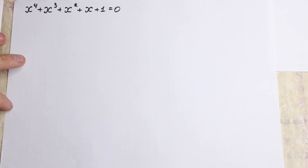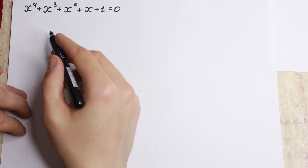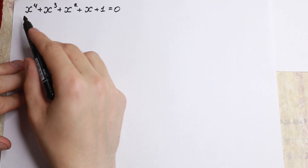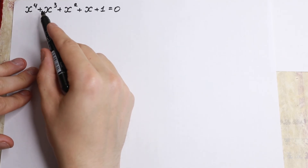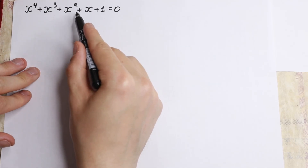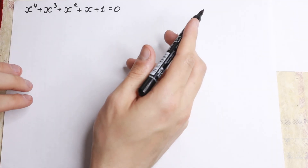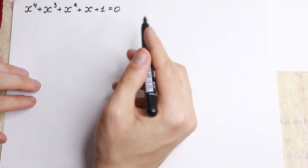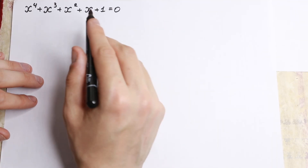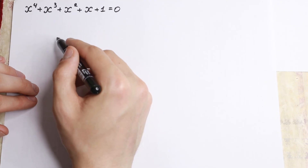Hello everyone, welcome back to high mathematics. In this video we're going to solve this really interesting equation. We have x to the fourth power plus x cubed plus x squared plus x plus one equal to zero. How can you solve this interesting problem? It should be a really good method.